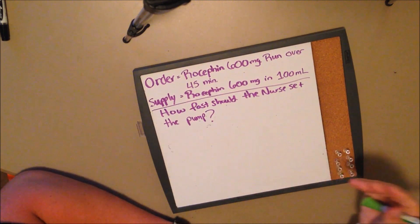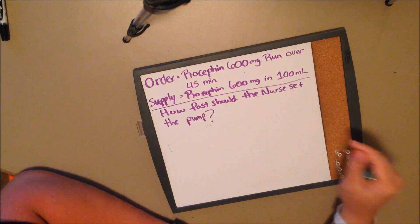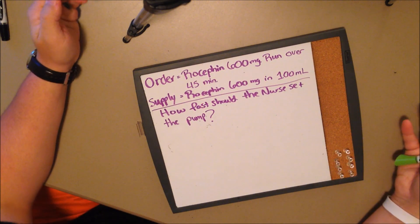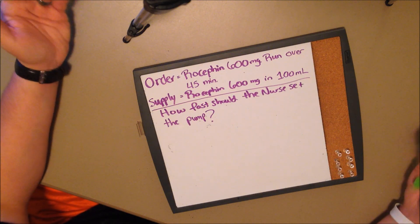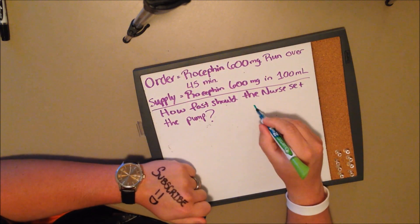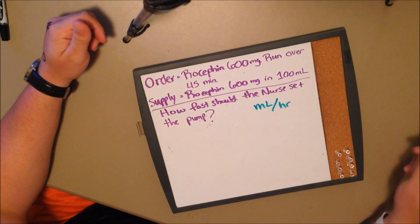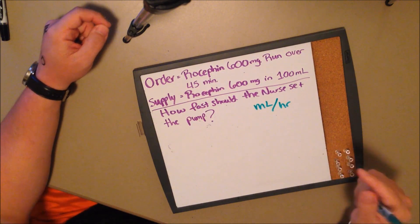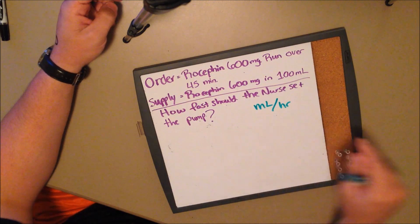In this next question, we have an order for Row 7 at 600 milligrams to run over 45 minutes. Supply is Row 7, 600 milligrams in 100 milliliters. The question asks how fast should the nurse set the pump. This is a question regarding an IV pump, which is different from other dosage calculation questions. The key piece of knowledge you must have: whenever we're talking about IV pumps, you always set an IV pump in milliliters per hour — always. So you already know your answer needs to be in milliliters per hour.